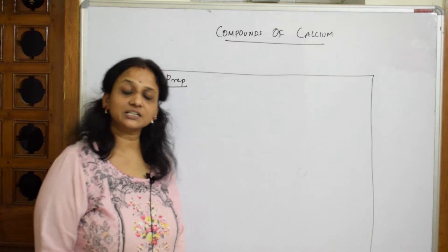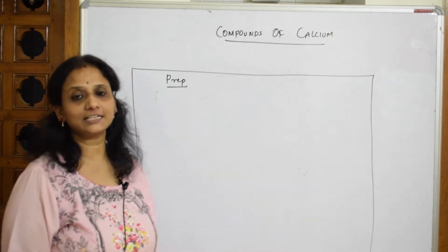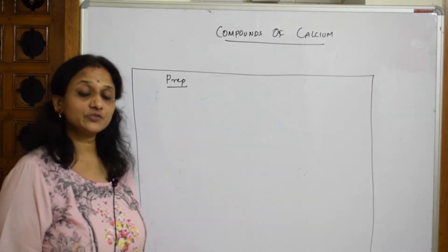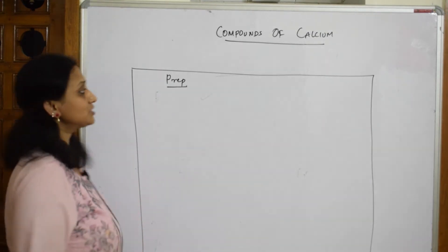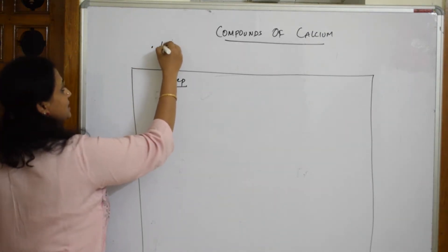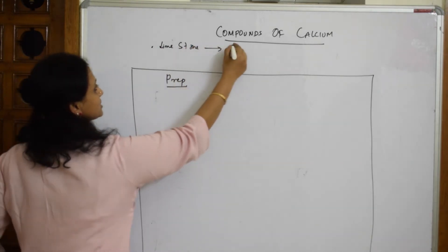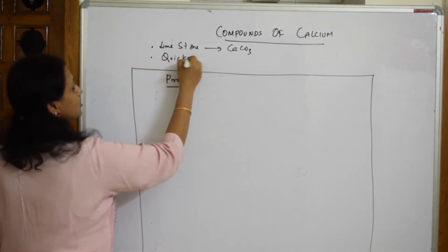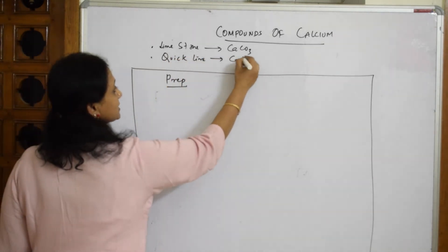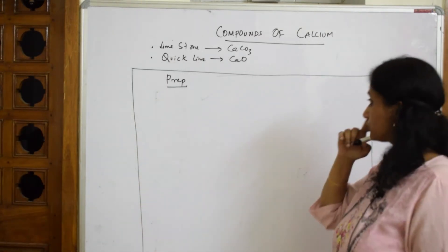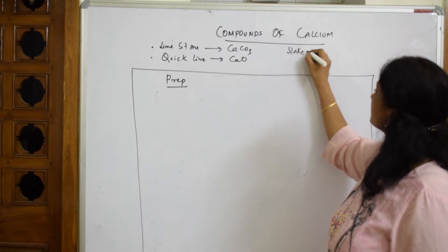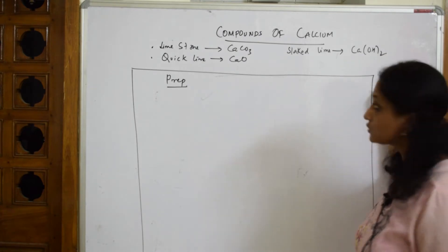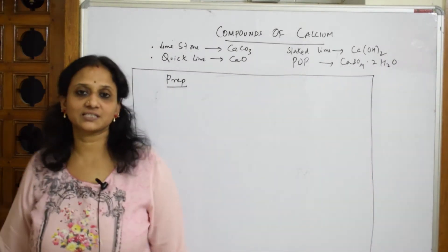Let us come back and do the last topic of alkaline earth metals: compounds of calcium. We have studied beryllium and magnesium, so now let's focus on calcium. The compounds we'll study are: limestone (CaCO₃), quicklime (CaO), slaked lime (Ca(OH)₂), and lime water.